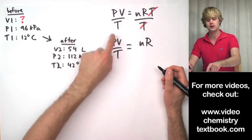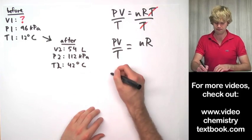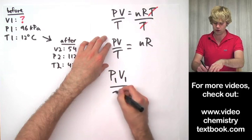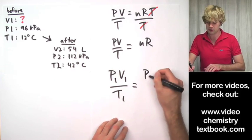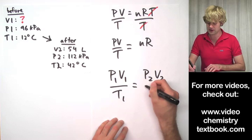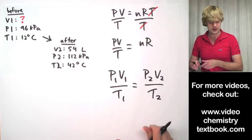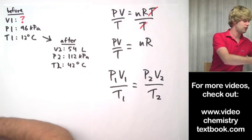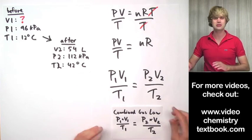So I now turn this to P1 times V1 over T1, double it on the other side, equals P2 times V2 over T2. And that was the, where is it here, that was the combined gas law.